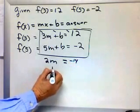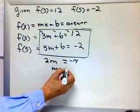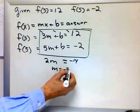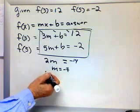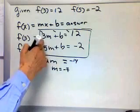Hey, I can solve it for m. m is minus 7, right? Divide both sides by 2. Now if I know m is minus 7, I can solve that and get b.